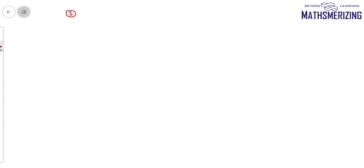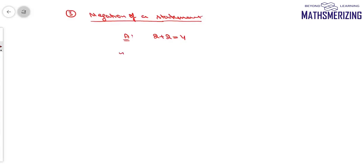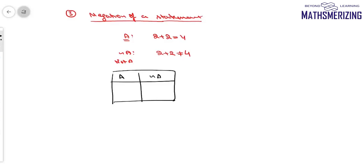The third connective we will study is negation of a statement. Suppose statement A is '2 plus 2 equals 4.' Negation is expressed with the tilde sign (~), so ~A is 'not A.' If A is '2 + 2 = 4,' then ~A is '2 + 2 ≠ 4.' In the truth table for negation: if A is true then ~A is false, and if A is false then ~A is true.